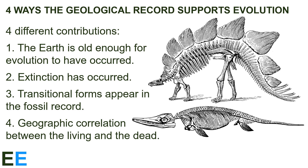First, the geological record indicates that the Earth is old enough for evolution to have had enough time to have occurred. Second, the fossil record provides many examples of extinction — things that once lived are no longer with us today. Third, there are transitional forms that appear in the fossil record that show connections between different groups of organisms over time. And fourth, there is a geographic correlation between the living organisms we see today and the dead organisms we see in the fossil record.